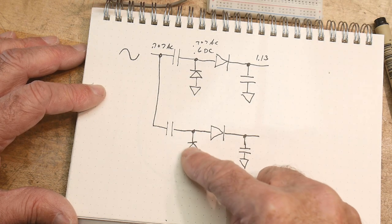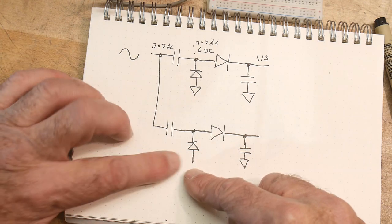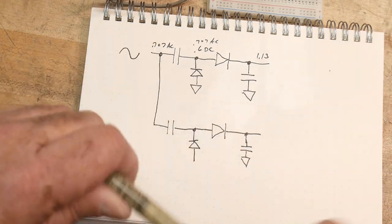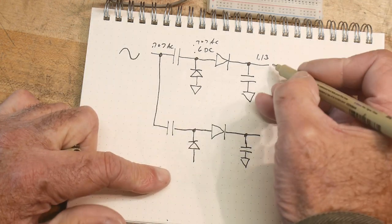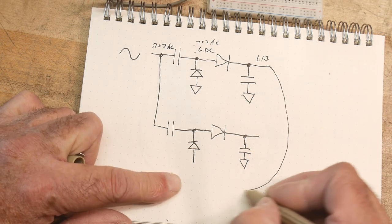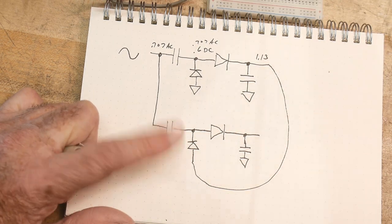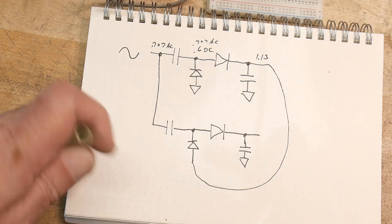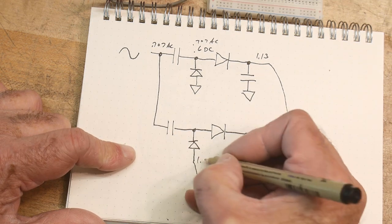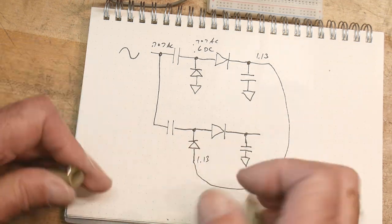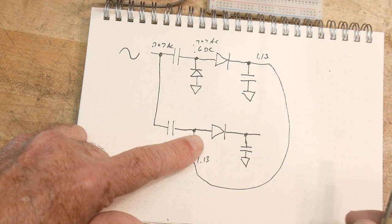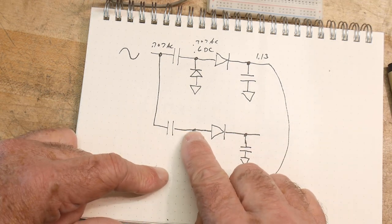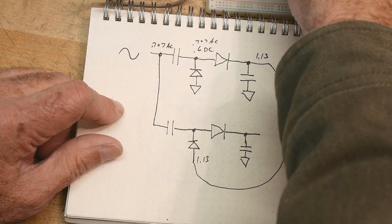But instead of this diode going to ground, I'm going to do a tricky thing. I'm going to take this voltage, and I'm going to put it here. So now what are we going to have? We're going to have 1.13 volts here. So then let's measure this voltage here, and see what we have.